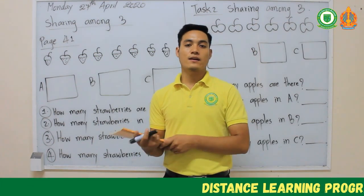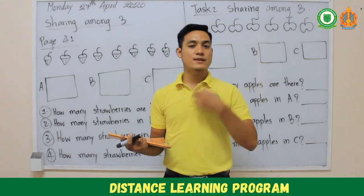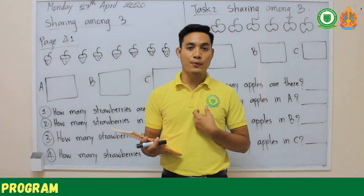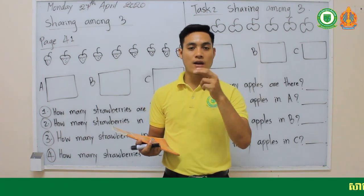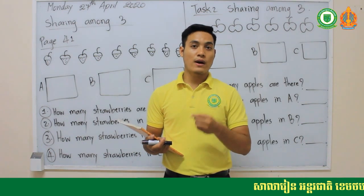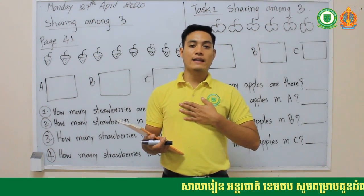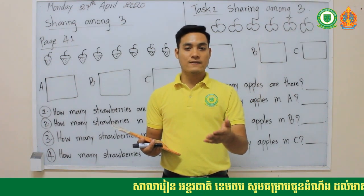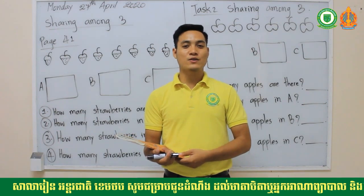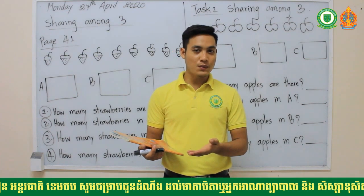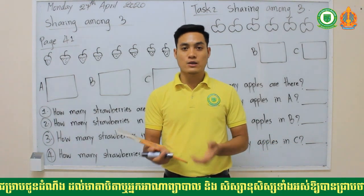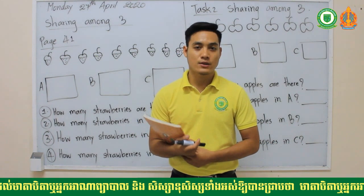For example, I have two apples and I need to share between two. I pick up one apple for myself, and the one that's left I give to my brother. So I get one apple and my brother gets one apple — that is sharing between two.